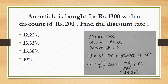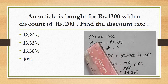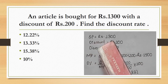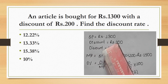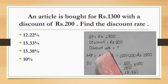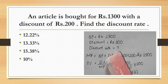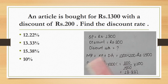An article is bought for Rs.1300 with a discount of Rs.200. Find the discount rate. The selling price (SP) is Rs.1300 and the discount is Rs.200. We need to find the discount rate.